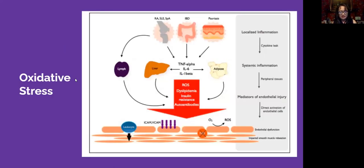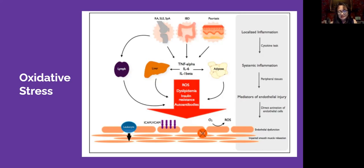Regarding oxidative stress, one study highlighted in the article showed that patients with rheumatoid arthritis had increased reactive oxygen species (ROS) from peripheral neutrophils, which was associated with increased disease severity. TNF-alpha was also shown to increase NADPH oxidases (NOXs), creating a destructive negative feedback loop on the endothelium.